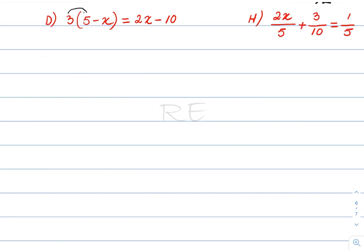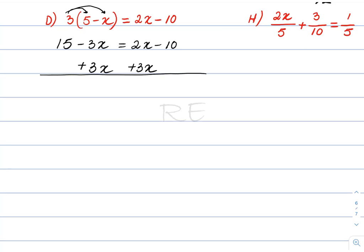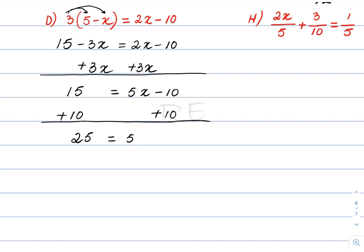We distribute 3 over 5 and 3 over negative x, giving 15 minus 3x is equal to 2x minus 10. We move 3x to the right side by adding 3x to both sides, so 15 is equal to 5x minus 10. Adding 10 to both sides gives 25 equal to 5x. Using the inverse operation, we divide by 5, and x is equal to 5.